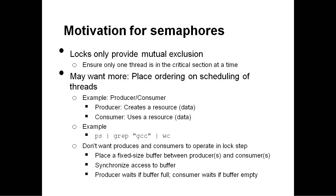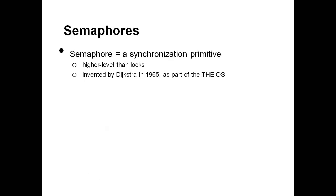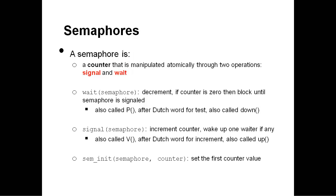The producer waits if the buffer is full, and the consumer waits if the buffer is empty. So let's look now at what semaphores are, and then we'll learn how they can solve this problem. A semaphore is a higher-level synchronization primitive than locks. It's often built using locks, and it was invented by Edgar Dijkstra around 1965 as part of the THE Operating Systems Project. A semaphore internally is a counter that has some special operations on it: a signal operation and a wait operation.